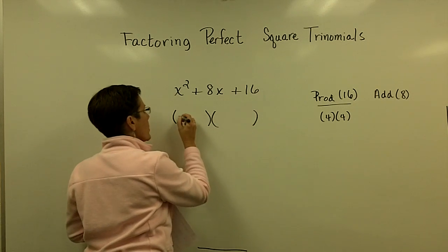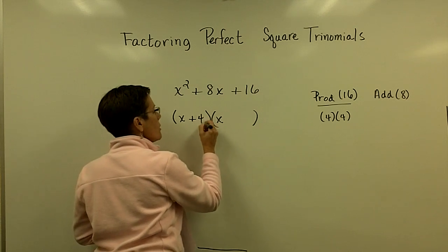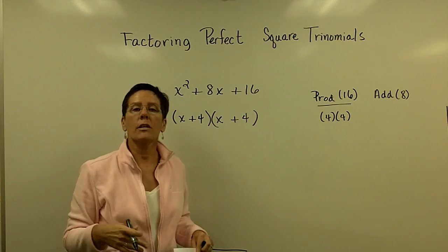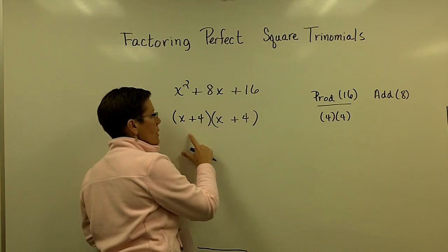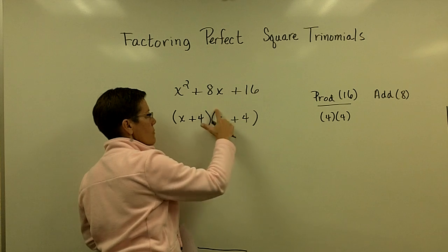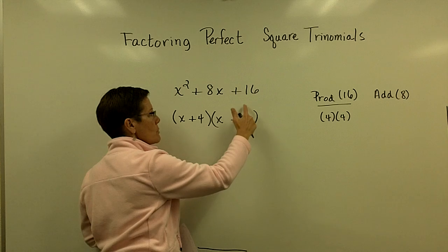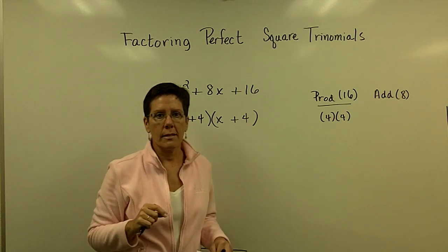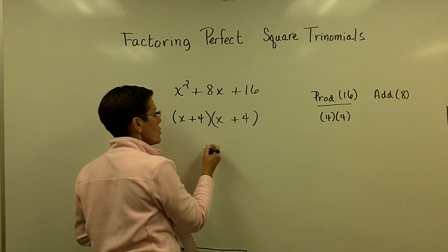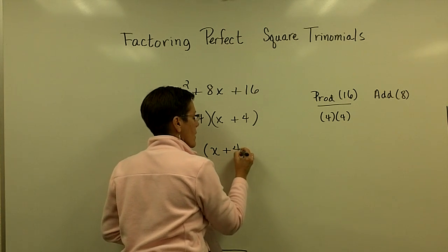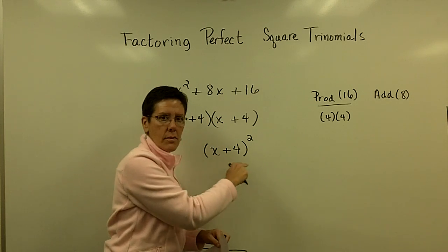we put the x in the front of each of these binomials, because their product is x squared, and the 4 and the 4 is the latter part of that binomial. If we foiled this, we would see that this x times x is the x squared. This 4x right there and that 4x right there adds to be the 8x, and finally the 4 times 4 is the 16. This is called a perfect square trinomial because it factors into the same two binomials, and we often just write it as that binomial squared.